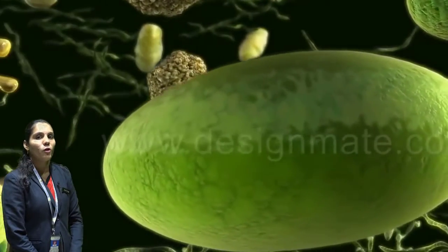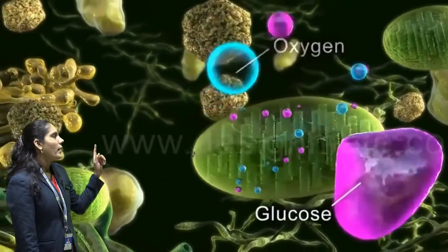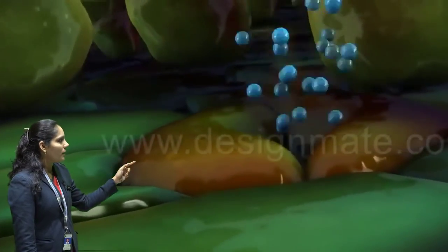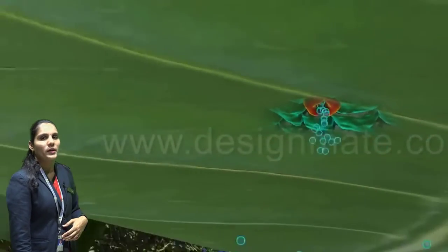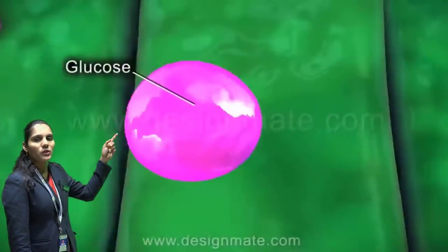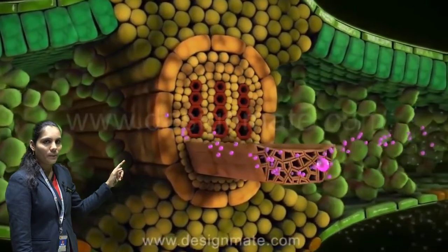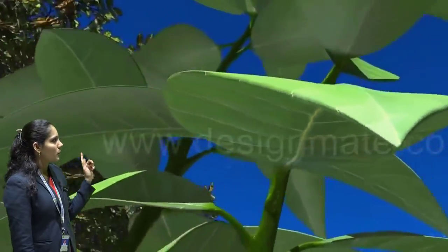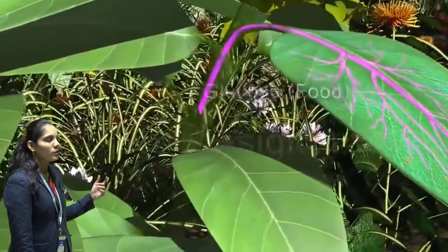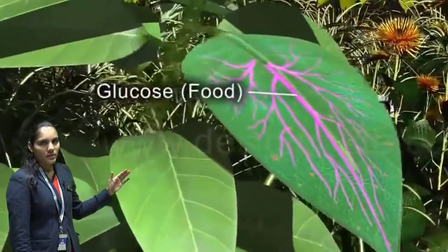With the help of the chlorophyll pigment and sunlight they combine the carbon dioxide molecules and water molecules together, and they form food in the form of carbohydrate — in the form of glucose. After the preparation of food they release oxygen in this process, and that oxygen is released into the atmosphere through the stomata. Whatever food is prepared by the plant is then transported to all parts of the plant with the help of specialized tubes known as phloem, to the roots also.